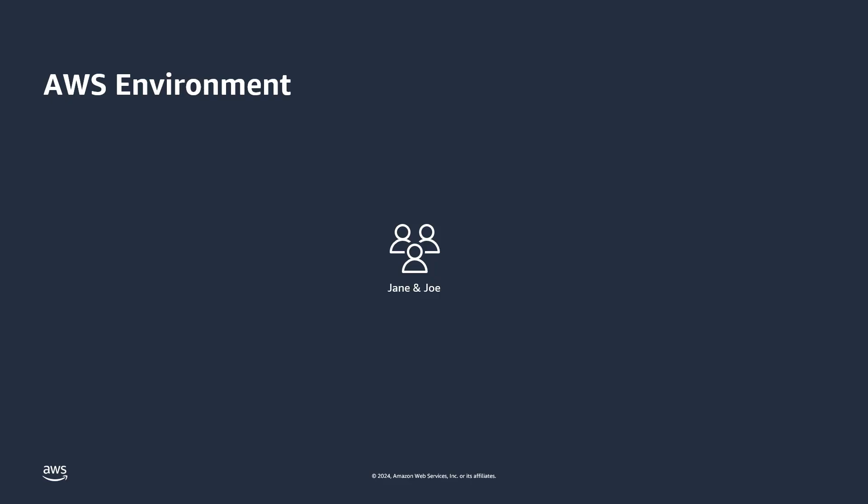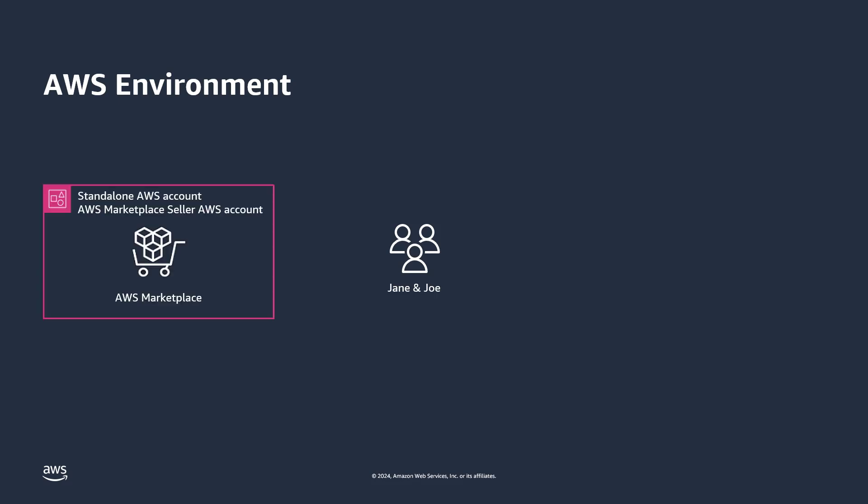Imagine your sales operation team has two employees, Jane and Joe. You would like Jane and Joe to have access to the AWS Marketplace Management Portal to create private offers or channel partner private offers for your buyers. To do this, you'll need to ensure that Jane and Joe have credentials to log into the AWS Marketplace seller account.